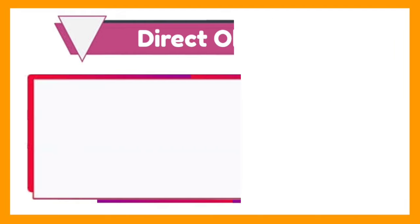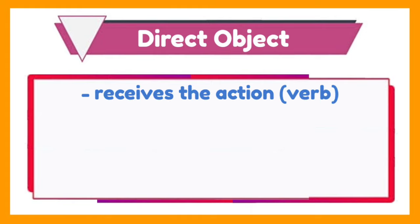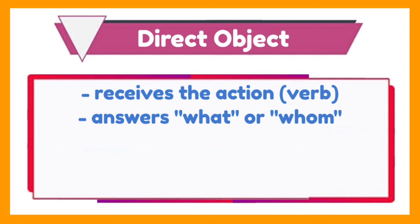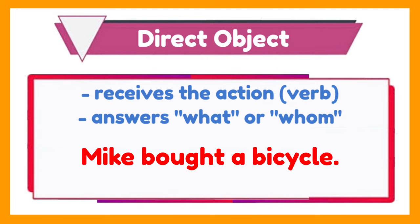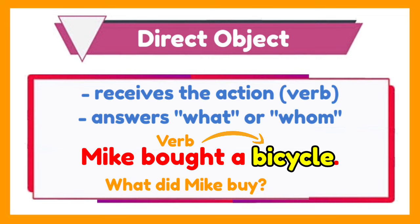Let us start with the direct object. A direct object is a word that receives the action or the verb in the sentence. It answers the question what or whom. For example, Mike bought a bicycle. The direct object in the sentence is bicycle, because it receives the action or the verb which is bought. And it answers the question, what did Mike buy?